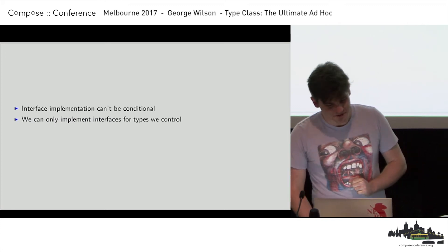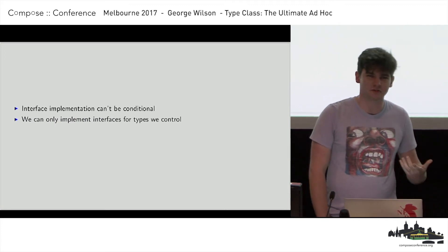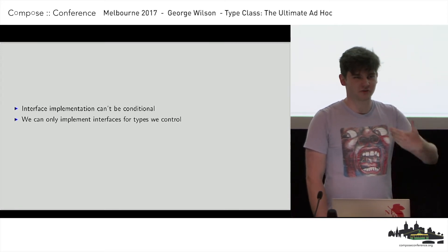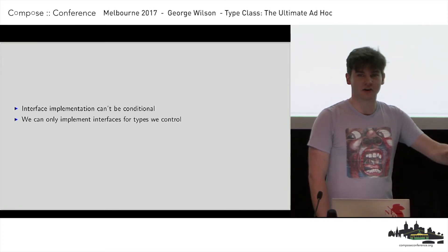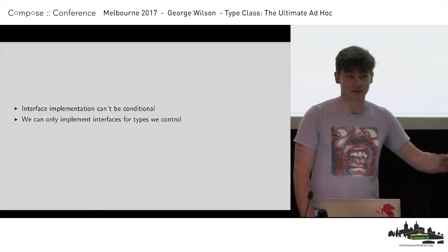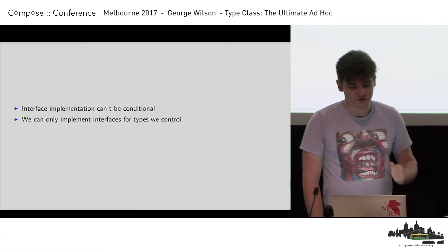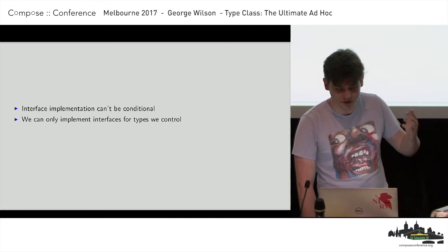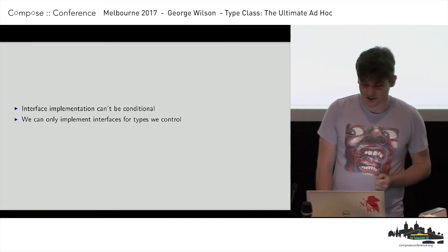So interface implementation can't be conditional. I can't say I have the `eq` method so long as the A type has an `eq` method, and if it doesn't, then I don't. And also we can only implement interfaces for types that we control — I can't go and change java.lang.String. As the gentleman said, this isn't Ruby.